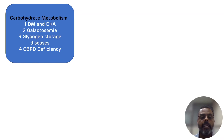First we will see the topic of carbohydrate metabolism. From the carbohydrate metabolism, frequently asked case studies are diabetes mellitus and diabetic ketoacidosis. Second one is galactosemia. Third one is glycogen storage diseases, and from the glycogen storage diseases the most frequently asked case study is type 1 glycogen storage disease, that is Von Gierke disease.